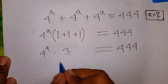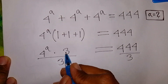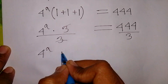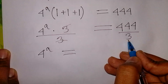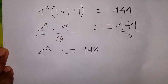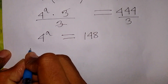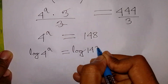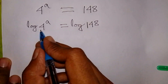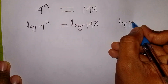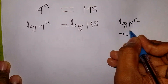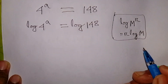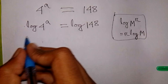Now we divide both sides by 3. This 3 and this 3 cancel out, so we have 4 power a is equal to 444 divided by 3, which is 148. Now we apply log to both sides: log of 4 power a is equal to log of 148. Applying the rule log m power r equals r log m, this power a jumps to the front, giving a log 4.